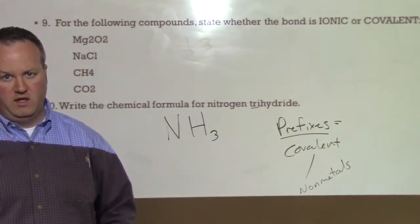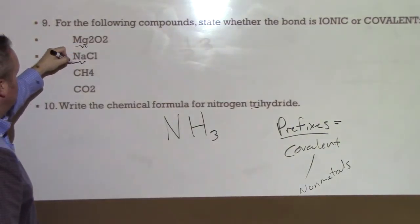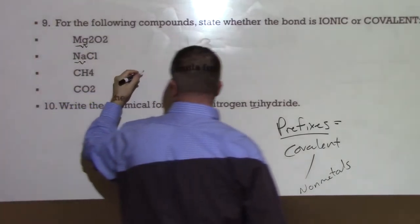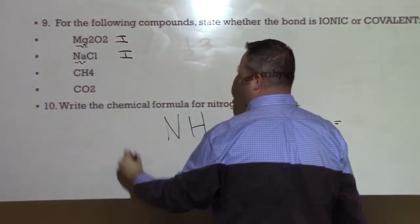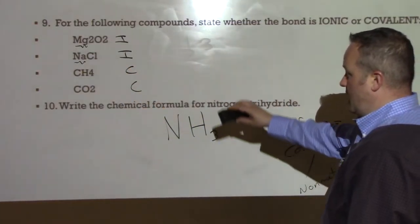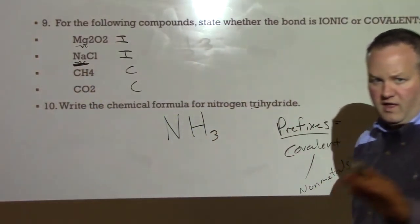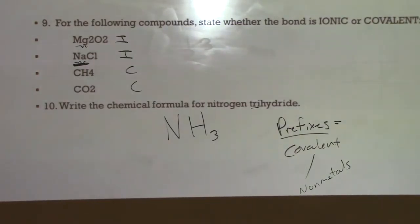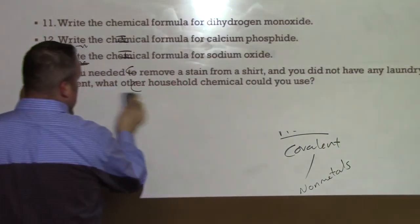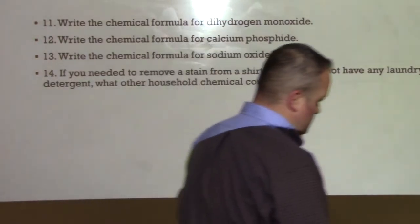Alright, so looking at these compounds, state whether they are ionic or covalent. This is actually very simple. You just need to ask yourself if there is a metal that's involved in the formula. If it has a metal, it has to be ionic. So here, magnesium and sodium, those are metals. Carbon is not. So we can say that these first two are ionic, whereas the second two are going to be covalent. Again, in an ionic bond, the metal always comes first in the formula as well as the name.